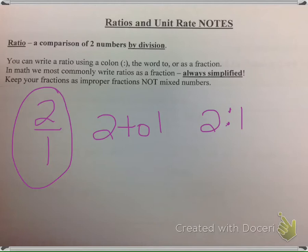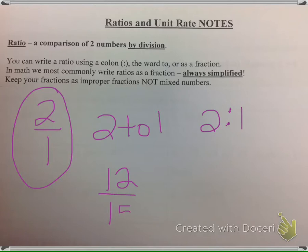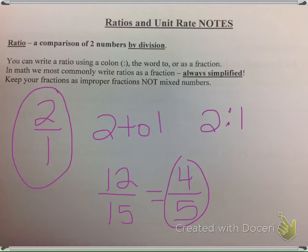You always need to keep your fraction as an improper fraction and not a mixed number. For example, it has to be written as 2 over 1, not just 2. If it was 7 halves, it would have to be written as 7 over 2, not 3 and a half. Also, your ratio should always be simplified. If I had 12 over 15, you'd have to simplify that to 4 over 5. Make sure it's a simplified fraction — not a mixed number, not a whole number, a fraction.